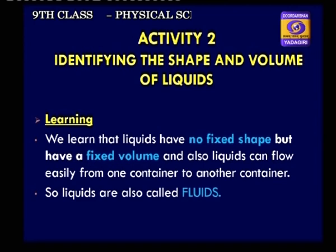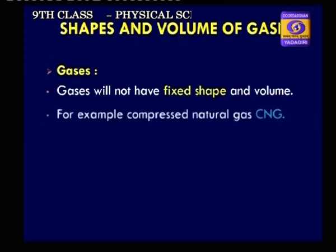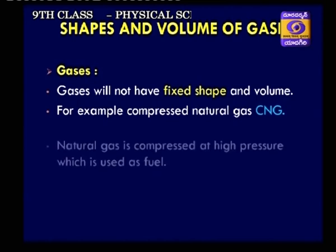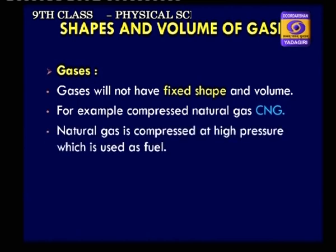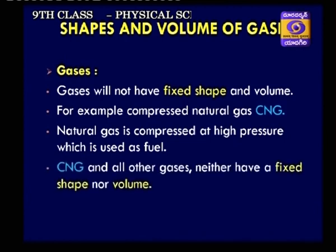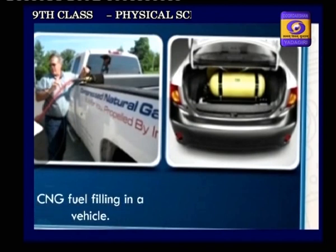Now let us observe the shape and volume of gases. Gases do not have fixed shape and volume. For example, compressed natural gas (CNG) — natural gas is compressed at high pressure and used as fuel. CNG and all other gases neither have fixed shape nor volume. Children, observe the picture of CNG fuel filling in a vehicle and a CNG cylinder in a car.